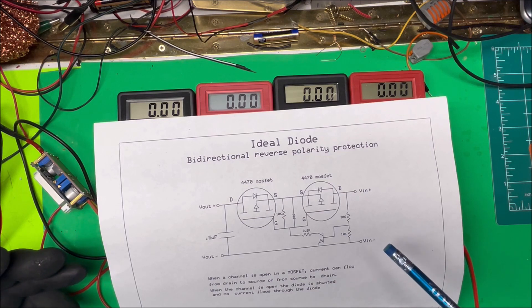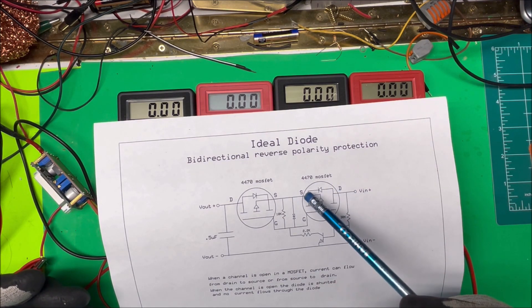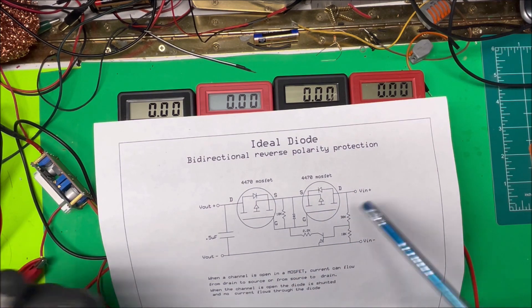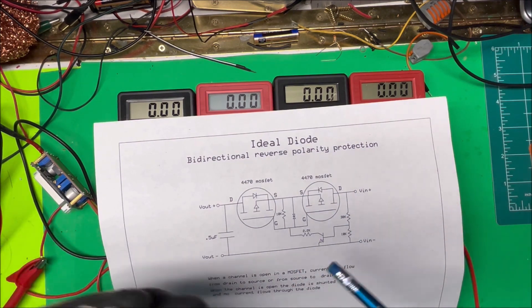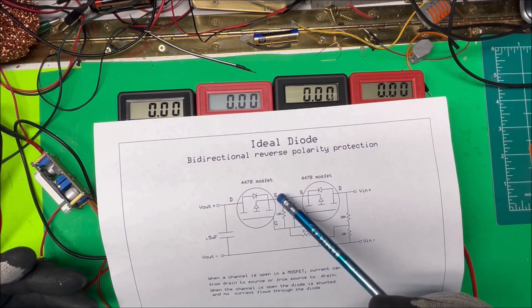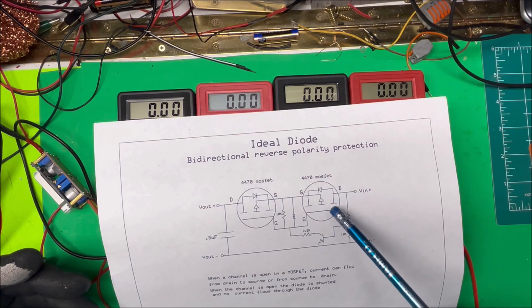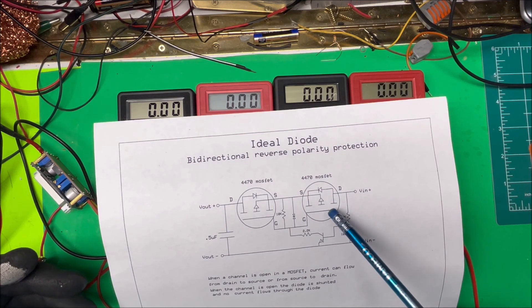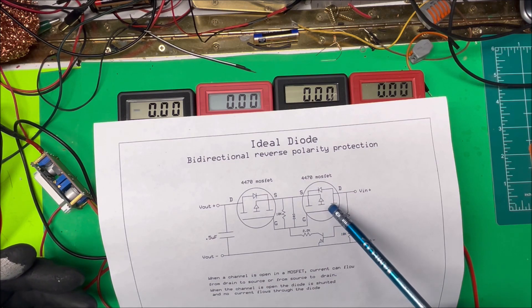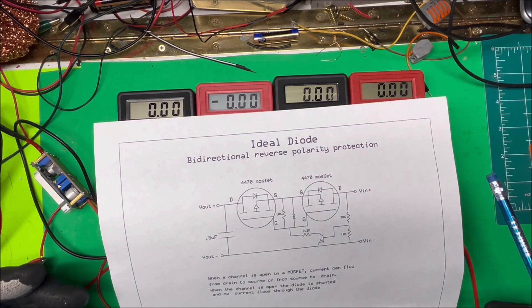Now when the channel is open in a MOSFET, current can flow from drain to source or it can drain from source to drain. It's just open, it can go either direction here. So when we turn them both on, current flows from the drain to source and then from the source to drain. It just goes straight through. The resistance of the channel here is so low that all the current runs through there and nothing goes through the diode there. So we don't have any diode drop on this, so that works fine that way.